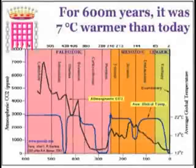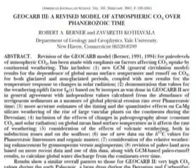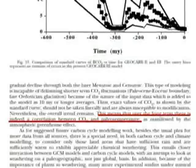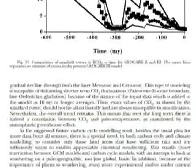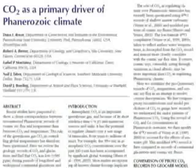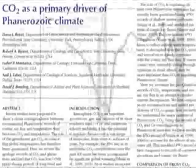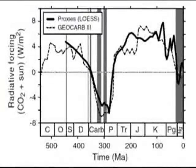Scotese hasn't done any analysis of correlation, but Berner has. Let's look at the paper where the data Monckton used was published — which Monckton obviously should have read if he's citing it as his source. Berner's conclusion reads: 'Over the long term there is indeed a correlation between CO2 and paleo temperature, as manifested by the atmospheric greenhouse effect.' Did Monckton somehow miss this? Dana Royer, who also reviewed all the data on past temperatures and CO2 levels in a landmark paper, also concluded there is a clear correlation throughout the Phanerozoic.